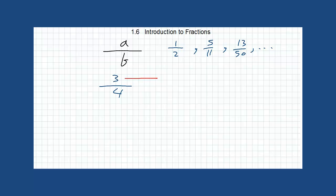This number on top we call the numerator, and the number down here we call the denominator. Every fraction has many equivalent fractions.